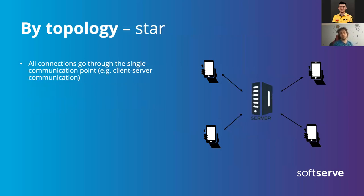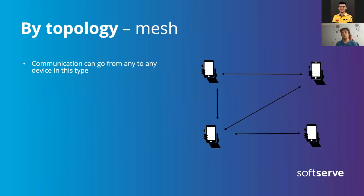Communication protocols can also differ by topology. Star topology is when everyone connects to the server — like client-server as we discussed. Mesh topology is when any device can connect to any other. This is typically used for peer-to-peer communications, but in some cases we have limitations on the number of connections and need to use a different topology.